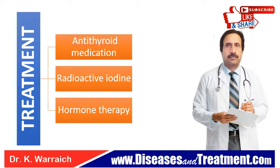Thyroid storm develops abruptly and affects all systems of the body. Treatment will begin as soon as thyroid storm is suspected, usually before lab results are back. Antithyroid medications such as PTU or Tapazole are given to reduce the production of thyroid hormones.